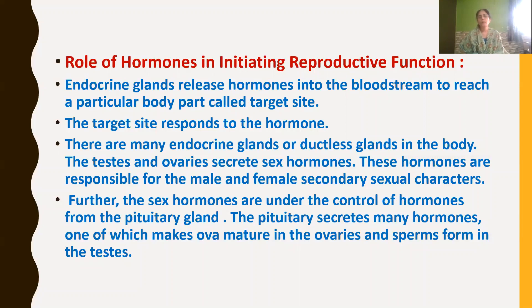The sex hormones are under the control of hormones from the pituitary gland. The pituitary gland controls all other endocrine glands — that is why we call it the master gland. The pituitary gland secretes many hormones, one of which makes the ova (otherwise called egg) mature in the ovaries. In the same way, it initiates the testes to produce sperms in male organisms.